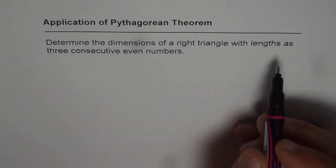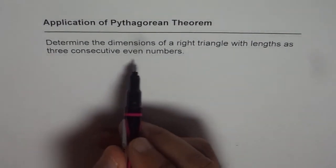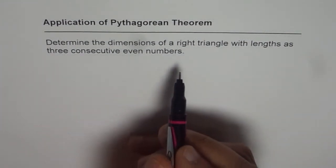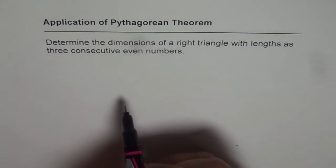Now, what do you understand by lengths as three consecutive even numbers? It means the numbers like 2, 4, 6, 8, so those are consecutive even numbers. In that kind, we have skip counting, right?